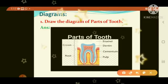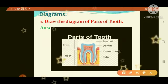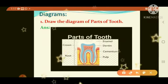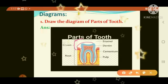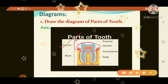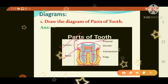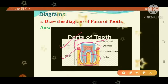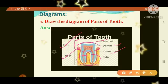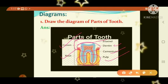Diagrams. First question: draw the diagram of parts of a tooth. See the picture and draw it very neatly in your classwork using only pencil. The upper part is called crown — C-R-O-W-N. The lower part is called root — R-O-O-T. The outer layer is enamel — E-N-A-M-E-L. The blue-colored part is dentine — D-E-N-T-I-N-E. The white-colored part is cementum. The pink-colored line representing blood vessels is pulp — P-U-L-P. Draw and label all its parts in your science classwork.